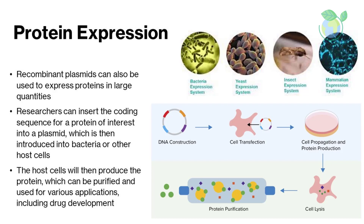Protein expression is another important application. Recombinant plasmids can be used to express proteins in large quantities. Researchers can insert the coding sequence for a protein of interest into a plasmid, which is then introduced into bacteria or other host cells. The host cells will then produce the protein, which can be purified and used for various applications, including drug development.